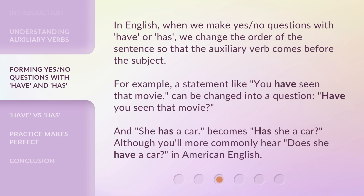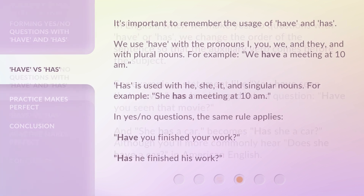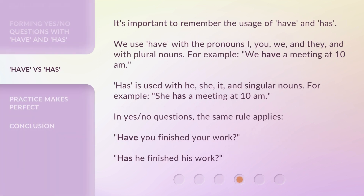In English, when we make Yes/No Questions with Have or Has, we change the order of the sentence so that the auxiliary verb comes before the subject. For example, a statement like 'You have seen that movie' can be changed into a question: 'Have you seen that movie?' And 'She has a car' becomes 'Has she a car?' — although you'll more commonly hear 'Does she have a car?' in American English. It's important to remember the usage of have and has.